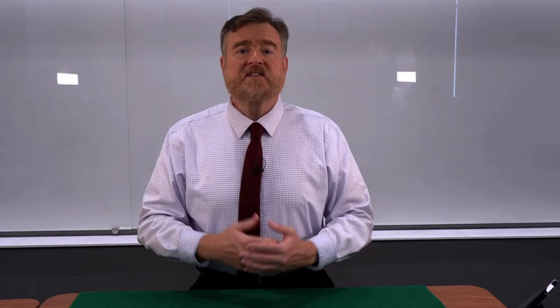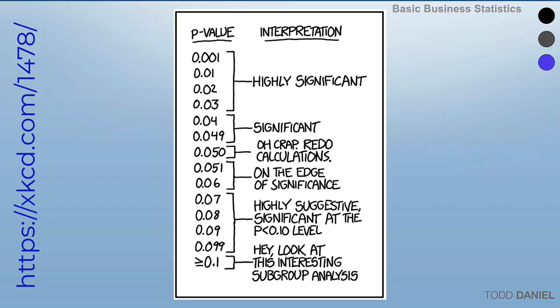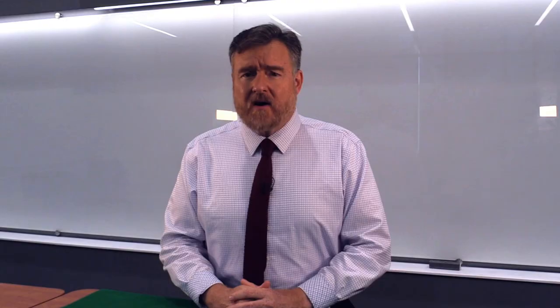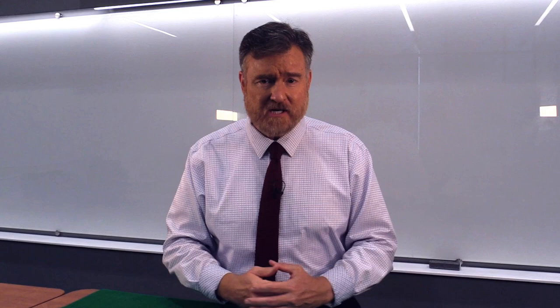This XKCD comic presents a humorous take on interpreting p-values — ranging from highly significant, to on the edge of significance, to 'oh crap, redo the calculations' if the value is precisely 0.05, to suggestive of significance, and when everything goes pear-shaped, 'hey look at this interesting subgroup analysis.' We all know from the jelly beans comic that when you start dicing the dataset into smaller and smaller portions frantically searching for something statistically significant, the rest of us have reason to be suspicious.